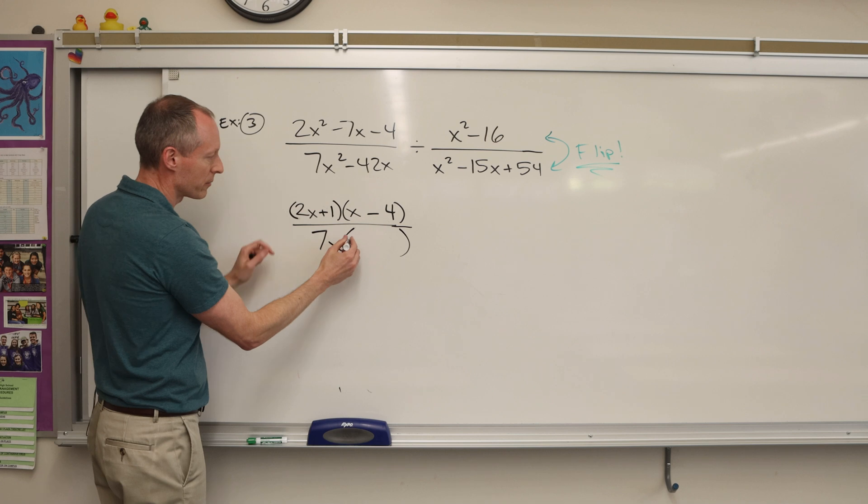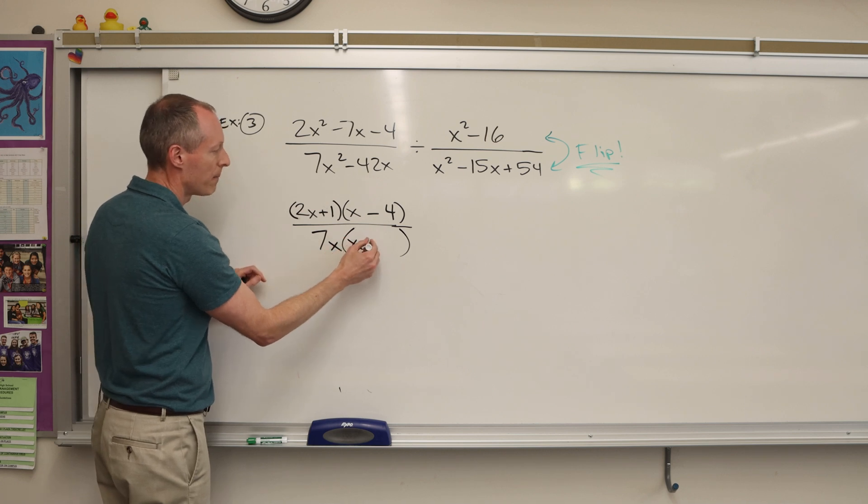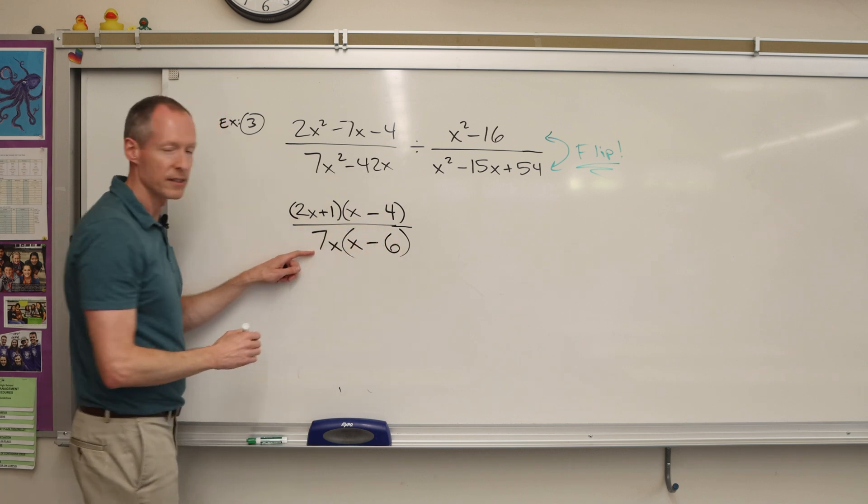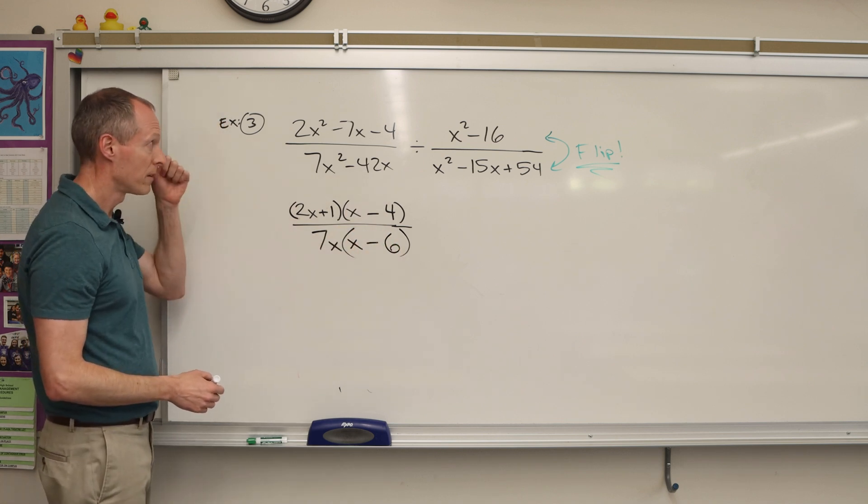And what would that leave us with? We take out that. We take out one of those x's, so we still have one x minus, and then basically 42 divided by seven is six. So we have the first fraction complete.